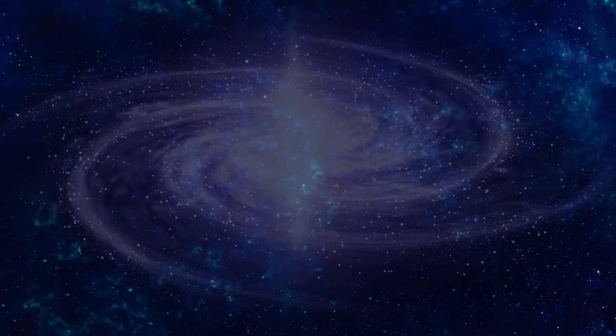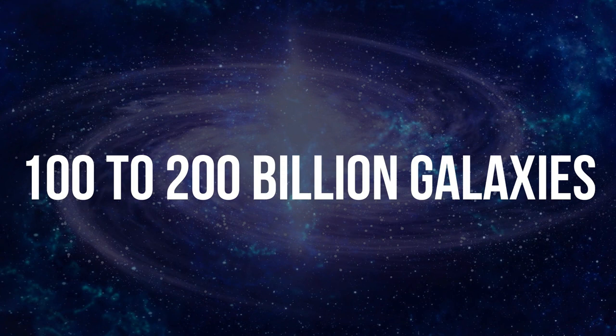Have you ever looked up into the night sky and wondered why it is dark? The good news is you are not alone. So why is the night sky dark? There are an estimated 100 to 400 billion stars in our galaxy and an estimated 100 to 200 billion galaxies in our observable universe. So any patch of sky you choose to look at should contain thousands, if not hundreds of thousands, of stars. Then where are they? Why can't we see them?